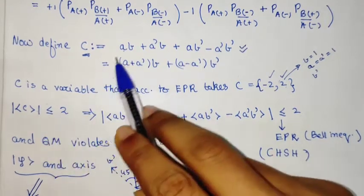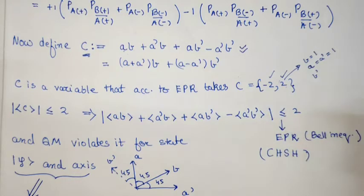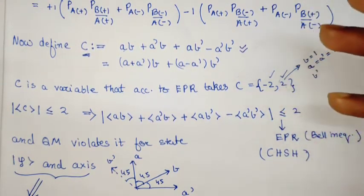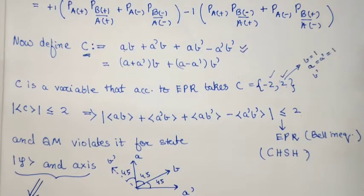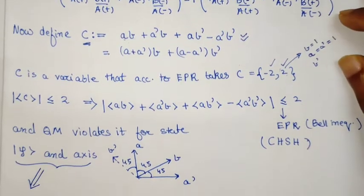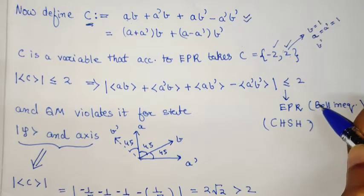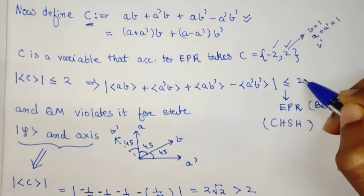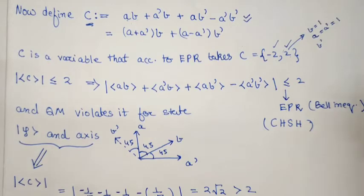We can take the expectation value, and C can be written in this particular fashion. The expectation value of C, using linearity of expectation over addition, is less than or equal to 2.